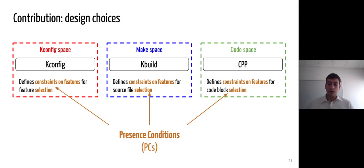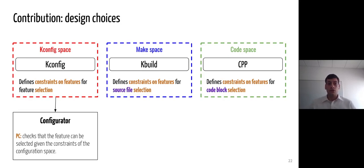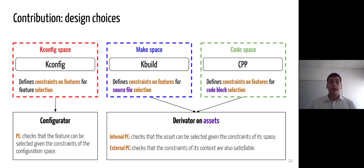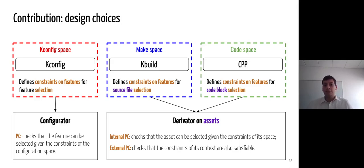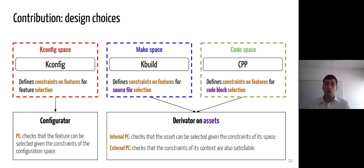We then define two concepts using these presence conditions. First, a configurator, which represents a step creating a configuration by solving constraints on features — which in the Linux build system represents kconfig. And a derivator on assets, representing a step using a configuration to derive the variant by selecting the different assets. This derivator represents kbuild, which selects source files, and CPP, which selects code blocks. Multiple spaces can be considered to determine if an asset is selectable or not.